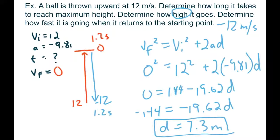Those are the key ideas for these questions — pretty basic. Just remember to always use negative 9.81, and remember that at the top we get a speed of zero. That's the key idea.